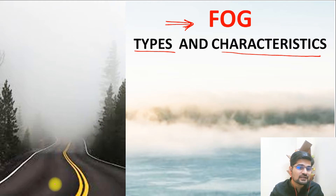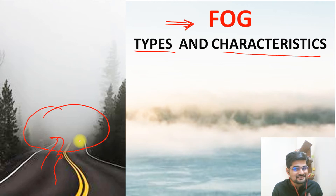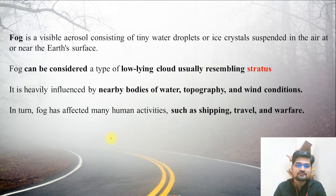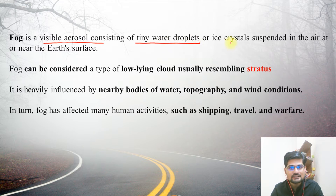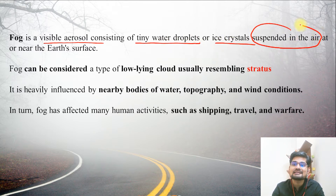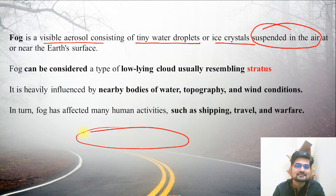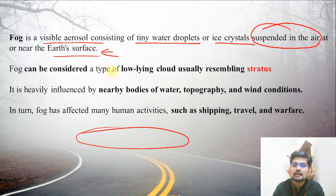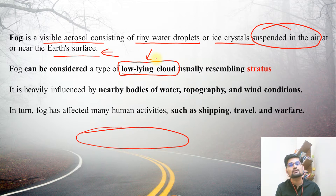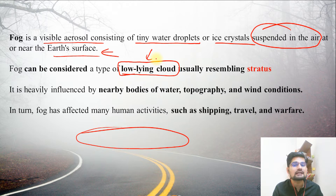This is what we generally observe. If there is a road and you have a visibility issue, we say it's a foggy condition, especially in winter. So what is fog? Fog is a visible aerosol containing tiny water droplets or ice crystals suspended in the air near Earth's surface. Fog can be considered as a type of low-lying cloud — very similar to cloud formation, but closer to the ground level.